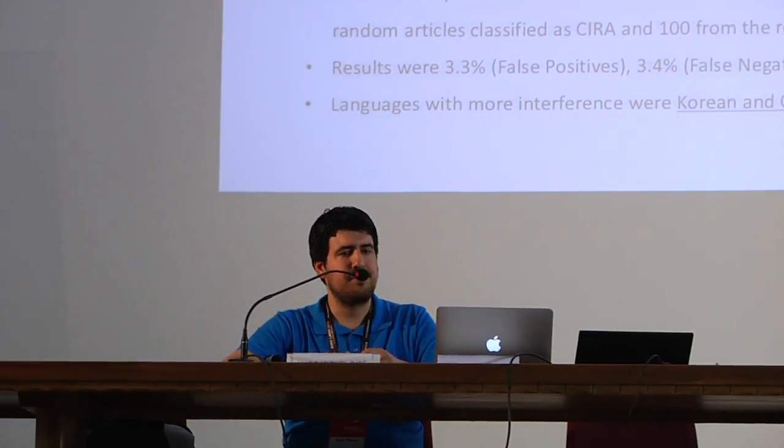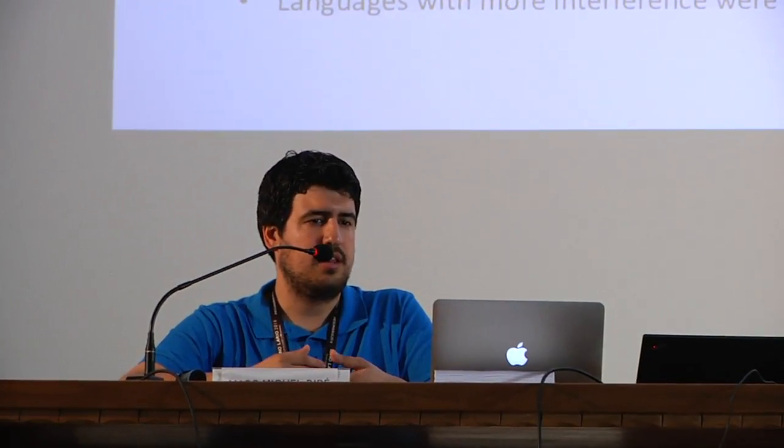So we proposed using a filter — something easy and understandable, taking into account the text. For each article to be inside the group, 50% of the outlinks needed to point to the ground truth articles — those validated as good articles from the first two strategies: the geolocated and the keywords. After using the filter several times, we could add only those articles which really accomplish the purpose of being in the group — really talking about cultural identities. We measured our success and found there were around 3.3% false positives and 3.4% false negatives, so the method was working well enough.